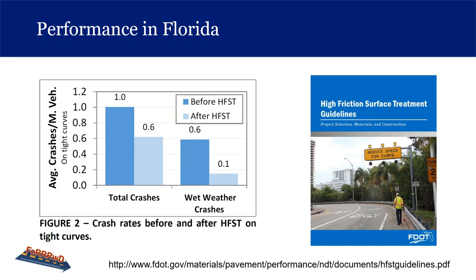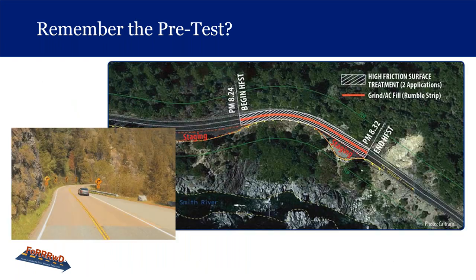We showed a video of a particular intersection where the addition of friction drastically reduced the number of crashes — it had both a curve and an intersection. We also showed a research study conducted in Florida by the Florida Department of Transportation with very good results, lowering crashes by around 50% — and that's typically a conservative number, probably even higher than that.